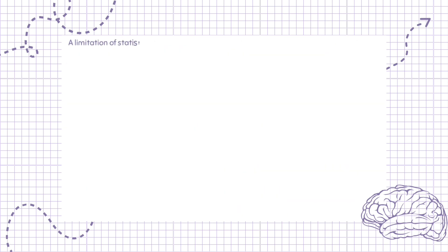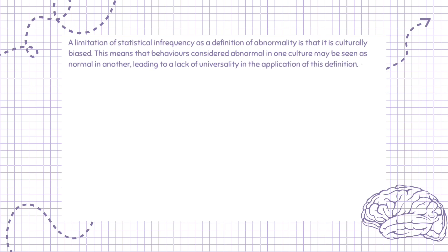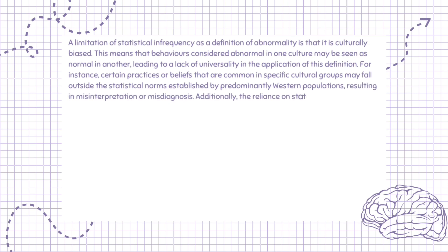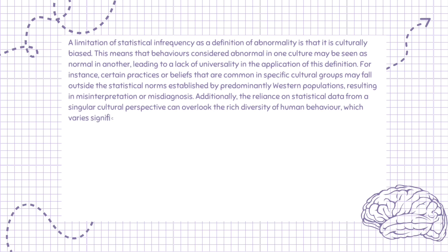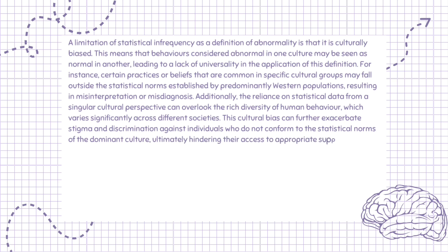A limitation of statistical infrequency as a definition of abnormality is that it is culturally biased. This means that behaviors considered abnormal in one culture may be seen as normal in another, leading to a lack of universality in the application of this definition. For instance, certain practices or beliefs that are common in specific cultural groups may fall outside the statistical norms established by predominantly Western populations, resulting in misinterpretation or misdiagnosis. Additionally, the reliance on statistical data from a singular cultural perspective can overlook the rich diversity of human behavior. This cultural bias can further exacerbate stigma and discrimination against individuals who do not conform to the statistical norms of the dominant culture, ultimately hindering their access to appropriate support.